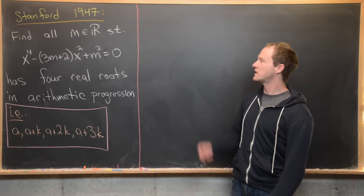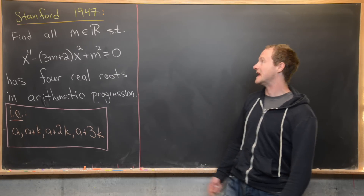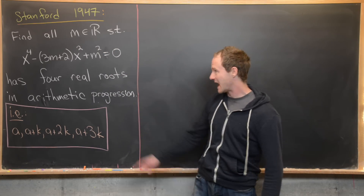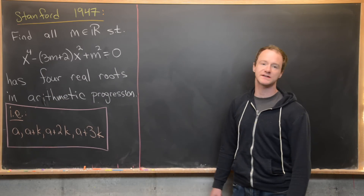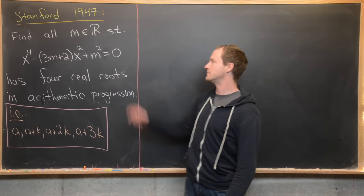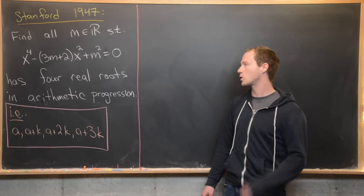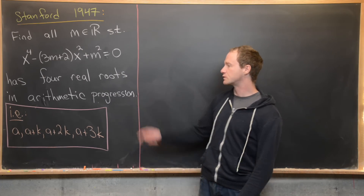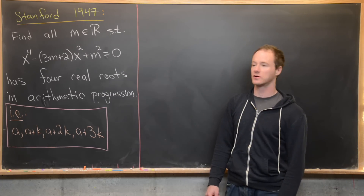We want to find all real numbers m such that x⁴ − (3m + 2)x² + m² = 0 has four real roots, and those real roots are in arithmetic progression.